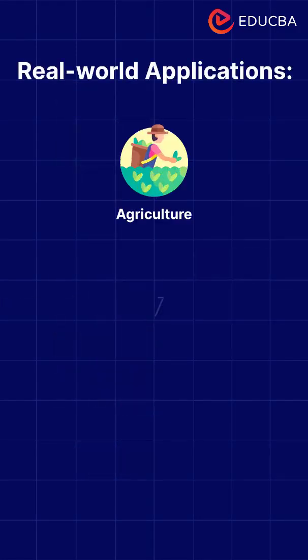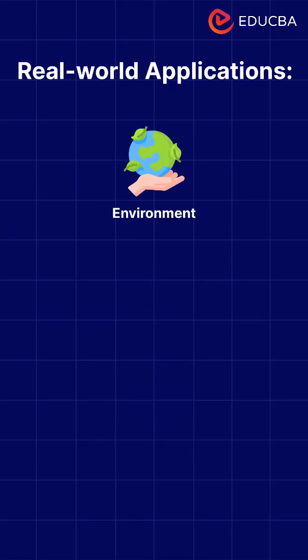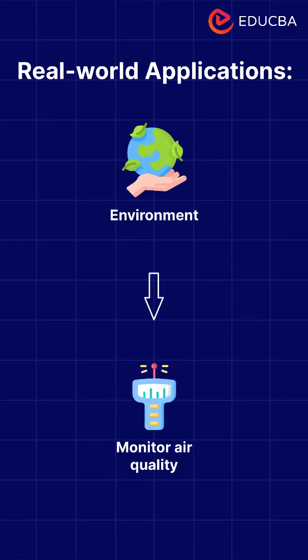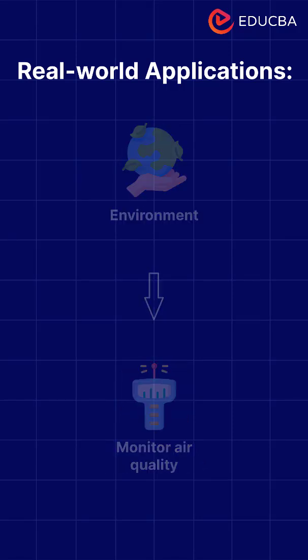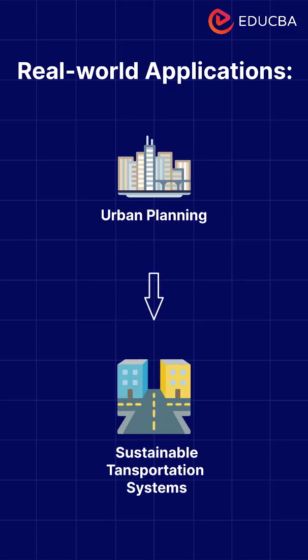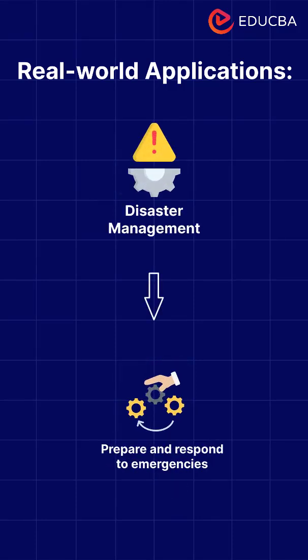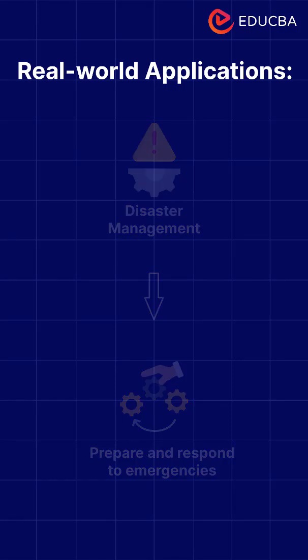Let's explore real-world applications. Agriculture: plant crops in the perfect spot. Environment: monitor air quality. Urban planning: plan sustainable transportation systems. Disaster management: prepare and respond to emergencies.